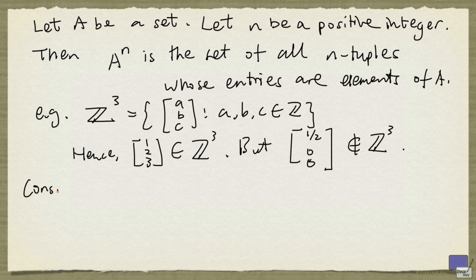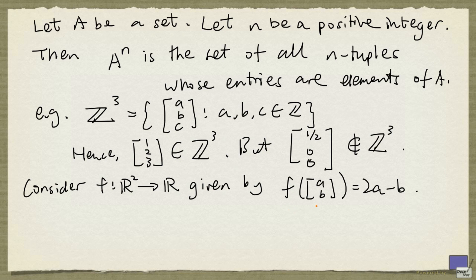Now let's consider the following function. And suppose that it is given by f of the tuple (a, b) = 2a - b. So what this function does is, it takes a 2-tuple, and then forms the output by multiplying the first entry by 2, and then subtracting the second entry.